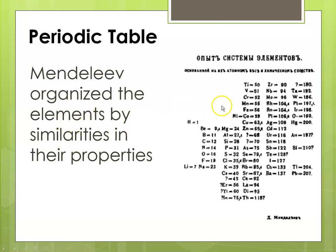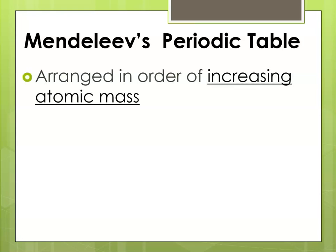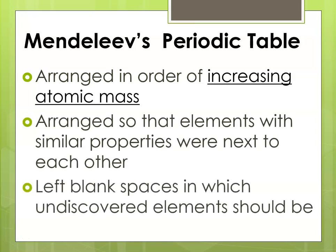If you look at this, you'll see that there are blank spots here and there, and that was where he knew elements should be. He arranged the elements in order of increasing atomic mass and arranged them so that elements with similar properties were next to one another. He left blank spaces where undiscovered elements should be. If you're ever asked on a multiple choice question who arranged the periodic table according to increasing atomic mass, the answer is Mendeleev.